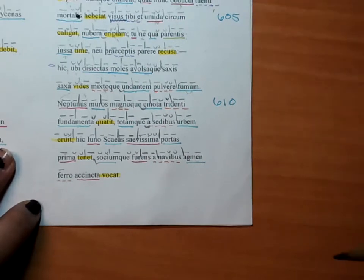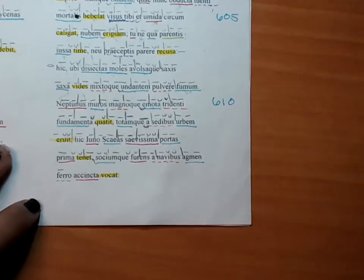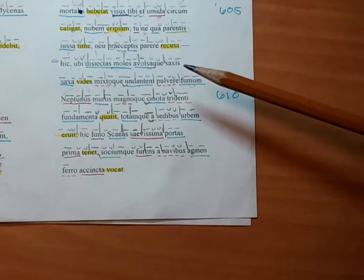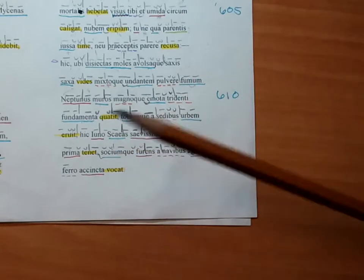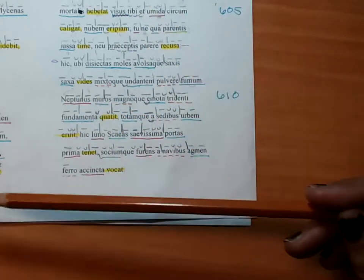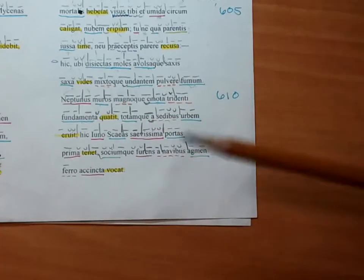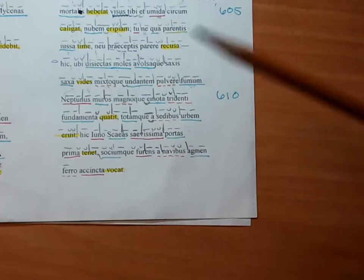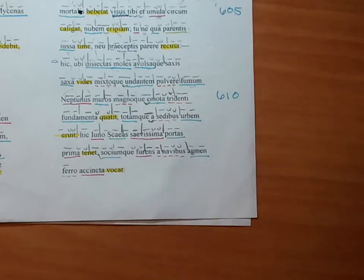Here we are, wrapping up book two of the Aeneid. So we're in the part where Aeneas sees Helen, he gets really mad, he wants to kill her. Venus shows up and is like, hey, what are you doing? Don't you remember your dad, your son, your wife? You should go get them.